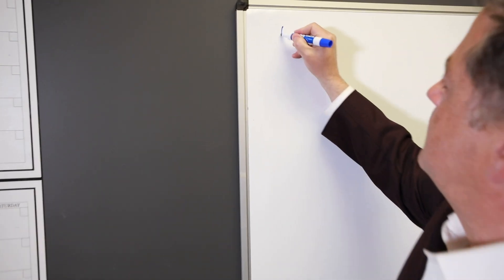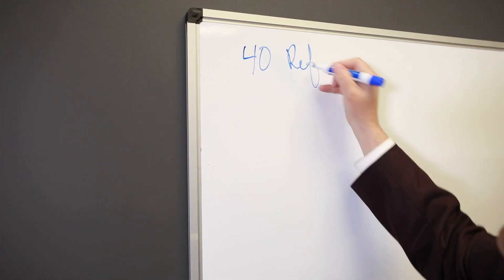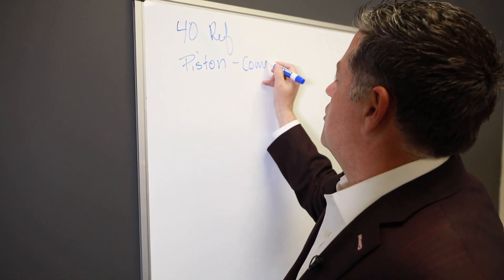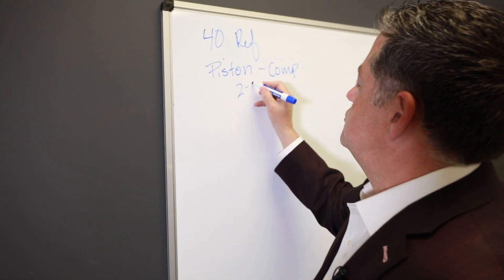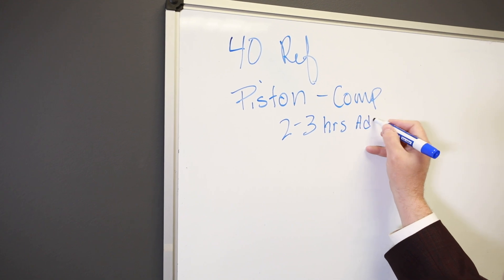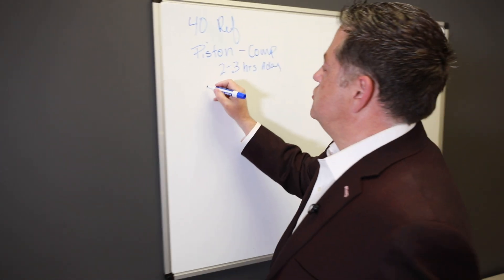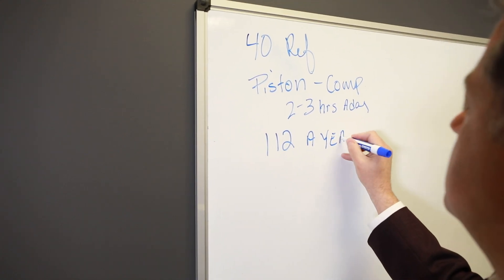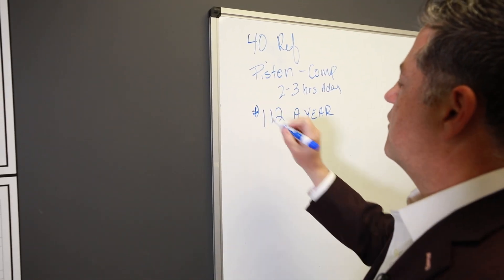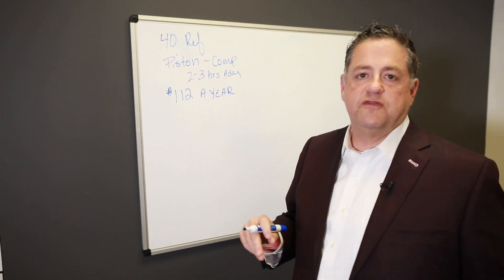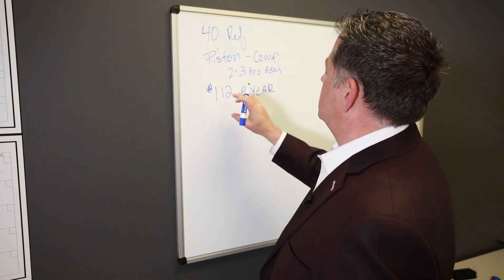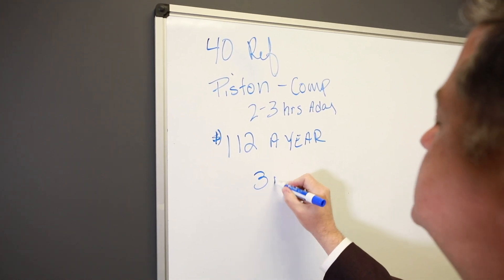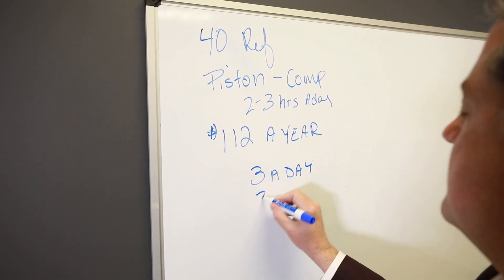The first thing I'm going to do is our 40-year-old refrigerator. That refrigerator has what we call a piston-driven compressor. This type of compressor works on average two to three hours a day. This refrigerator, on average, uses $112 a year. That's a number we're arbitrarily pulling from some of the old energy tags we found. So if your refrigerator is going to operate at $112 a year, it's going to run three hours a day, seven days a week.